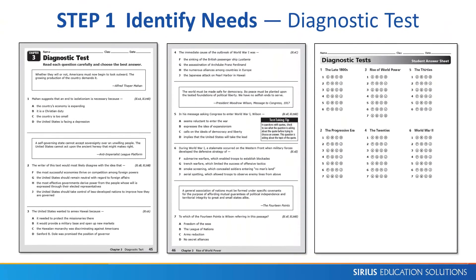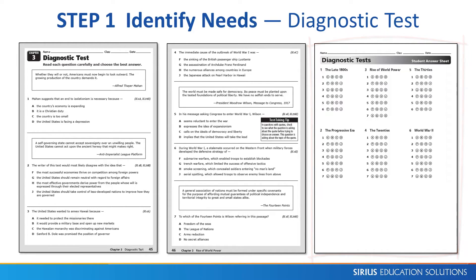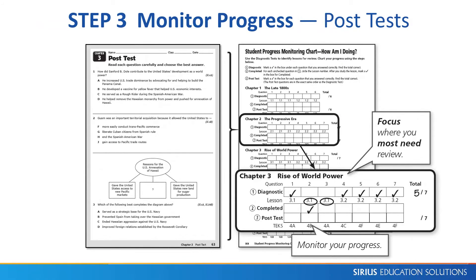Step one is to identify individual student needs using the 11 chapter diagnostic tests. Answer sheets are provided so students can practice with testing conditions. Step two is intervention using the lessons for instruction and STAR practice. Step three is to monitor progress using the chapter post-tests, which assess the same TEKS in the same sequence as the diagnostic tests.